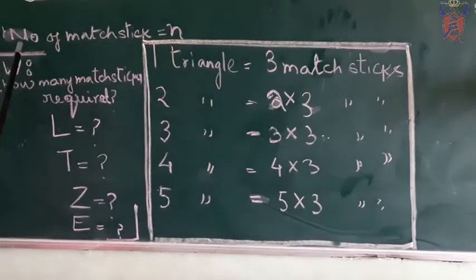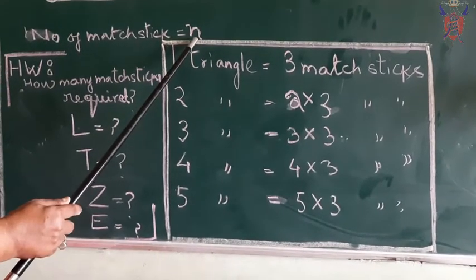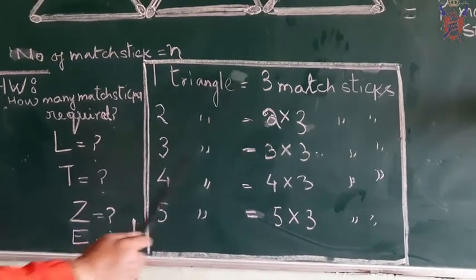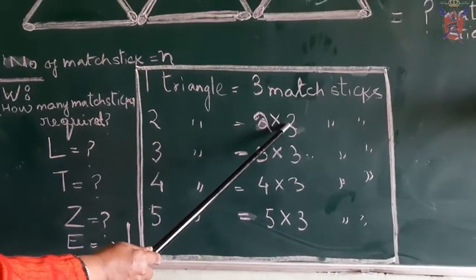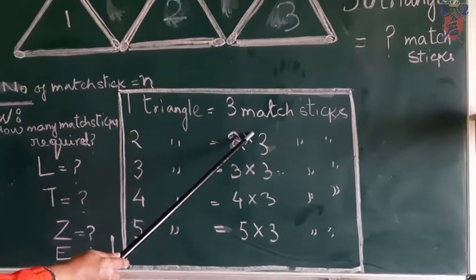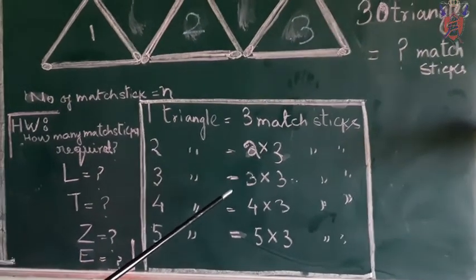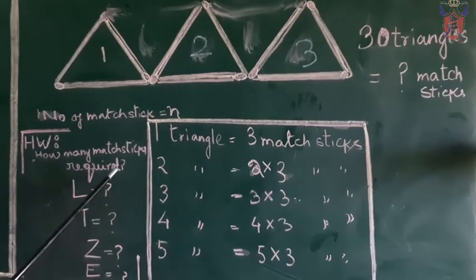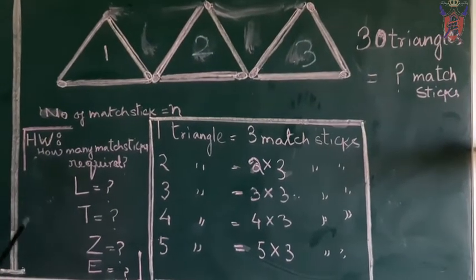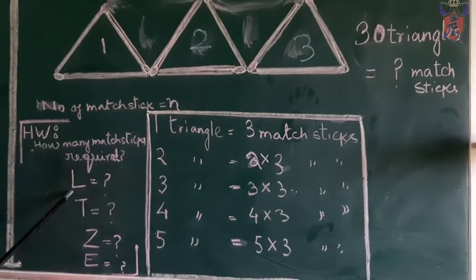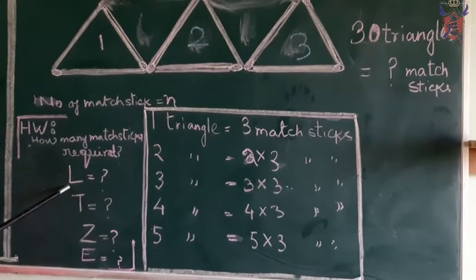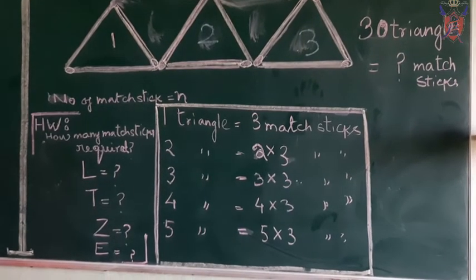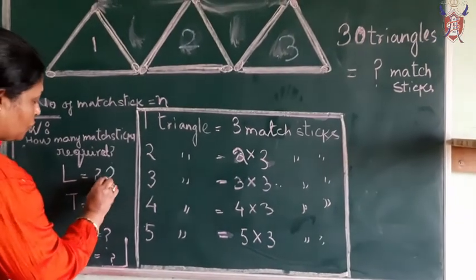I have written number of matchsticks equal to L. That means any number. You can see here 2 into L. Number of matchsticks is L. If I know the number of matchsticks, I can count any number. I have given you one example and you have some homework also. How to create that formula? I have written letter L. How many matchsticks are there? 2 matchsticks. How will you write? You can write the formula 2N.